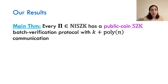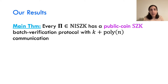Our main result is that every problem in NISZK has a public coin statistical zero-knowledge batch verification protocol with k plus poly(n) communication. We improved the previous results in two ways: first, we show a protocol that is also secure against a malicious verifier, and secondly, we show a protocol that is public coin.